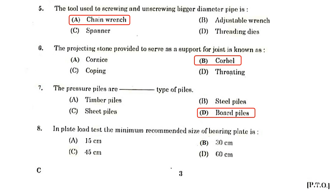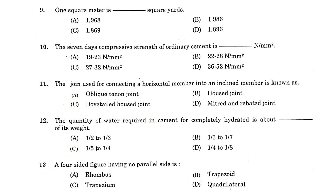In a plate load test, the minimum recommended size of bearing plate is 30 cm. 1 square meter is 1.195 square yards. The 7-day compressive strength of ordinary cement is 19 to 23 newton per mm square.